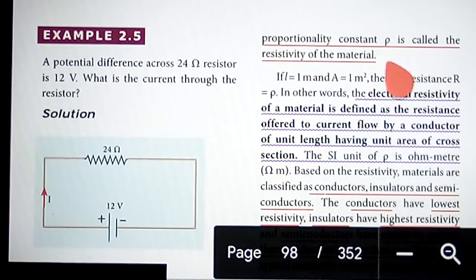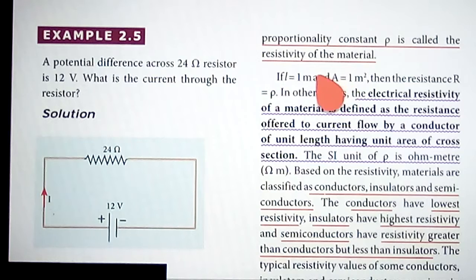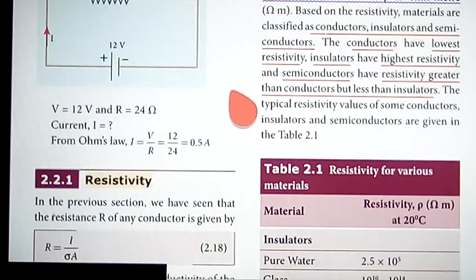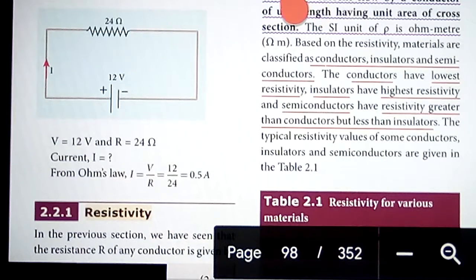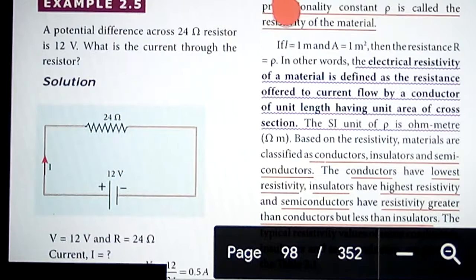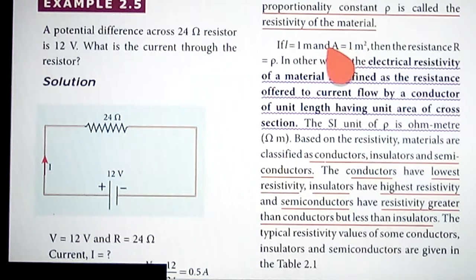Rho is called the resistivity of the material. If you have the length of the conductor as 1 meter and the area of cross section as 1 meter square, then the resistance R is equal to rho.